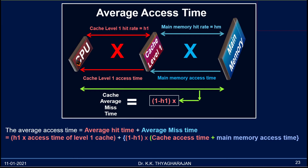This is the main memory. When the CPU requires data, first it will search in the cache. If it is available, then it is a hit. The hit rate is indicated by H1. If it is not available, then it is a miss — the data should be brought from the main memory to cache. The hit rate for the memory is Hm. The time required to access data from the cache is the cache Level 1 access time. The time taken to retrieve data from main memory and put it in the cache is the main memory access time.